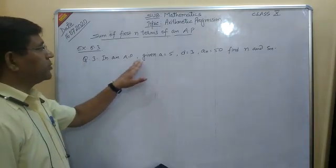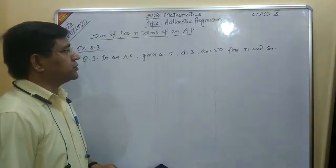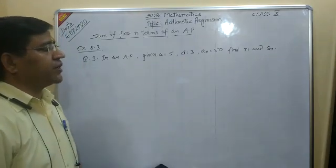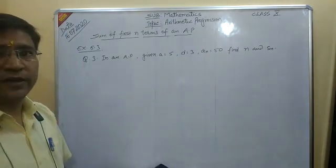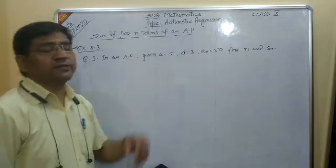In an arithmetic progression, given a equals 5, d equals 3, and a_n equals 50, find n and S_n—that means the number of terms, find out.